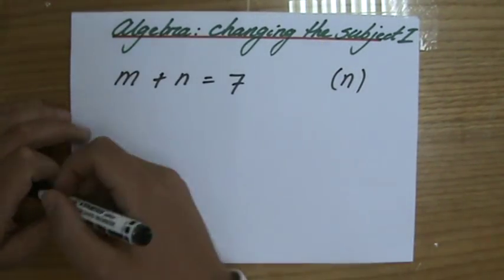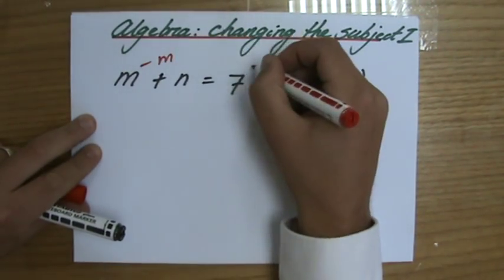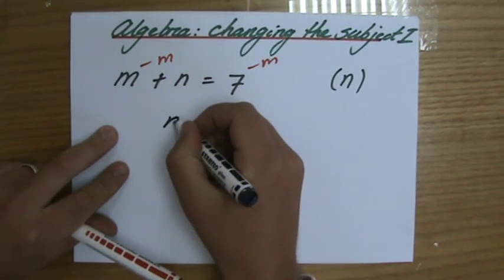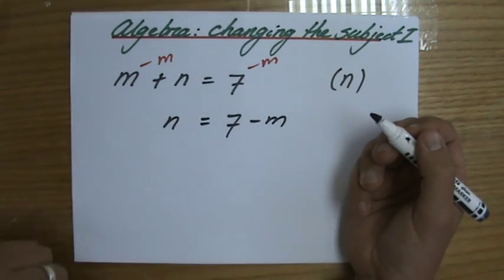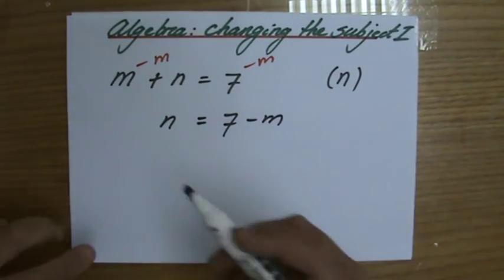Well, what do I have to do in this case then? I have to get rid of that m, and I do that by subtracting m on both sides of course. So for this problem, the answer would be n equals 7 minus m. Now n is the subject, because it says 1n equals 7 minus m.